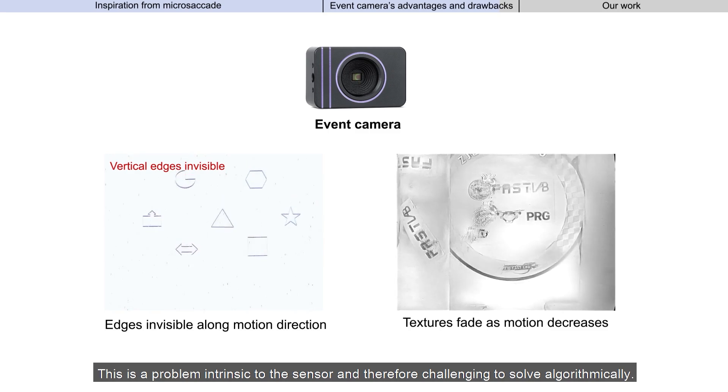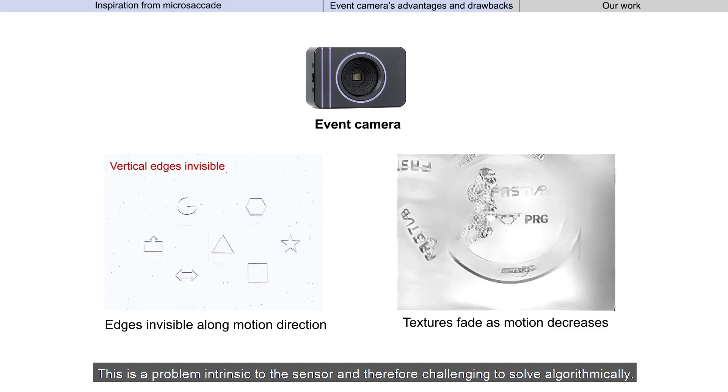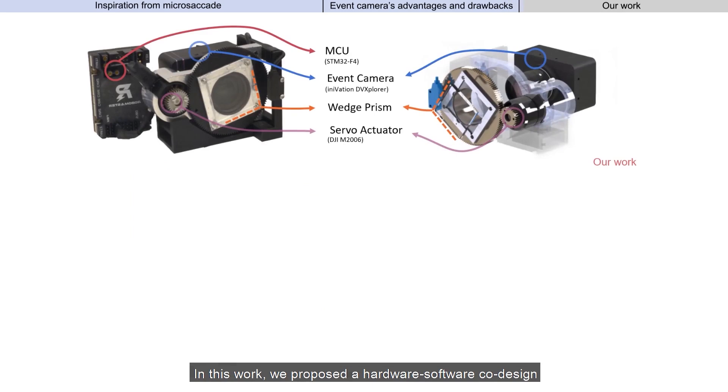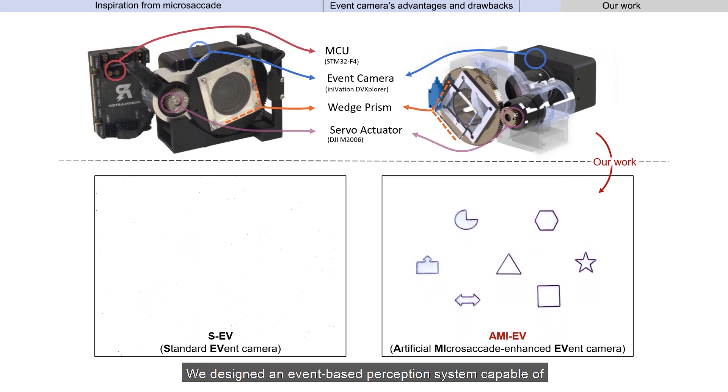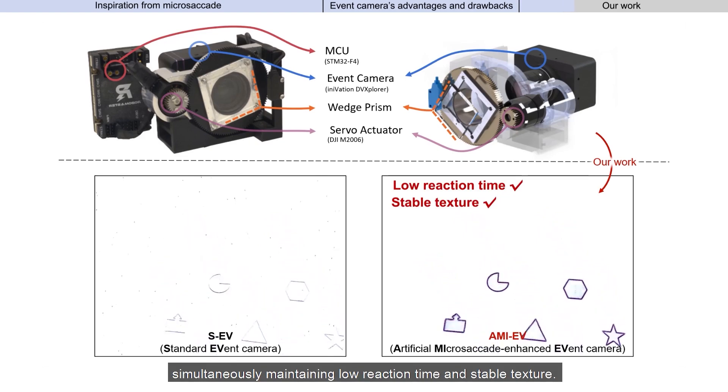This is a problem intrinsic to the sensor and therefore challenging to solve algorithmically. In this work, we proposed a hardware-software co-design to introduce microsaccade into robot vision systems. We designed an event-based perception system capable of simultaneously maintaining low reaction time and stable texture.